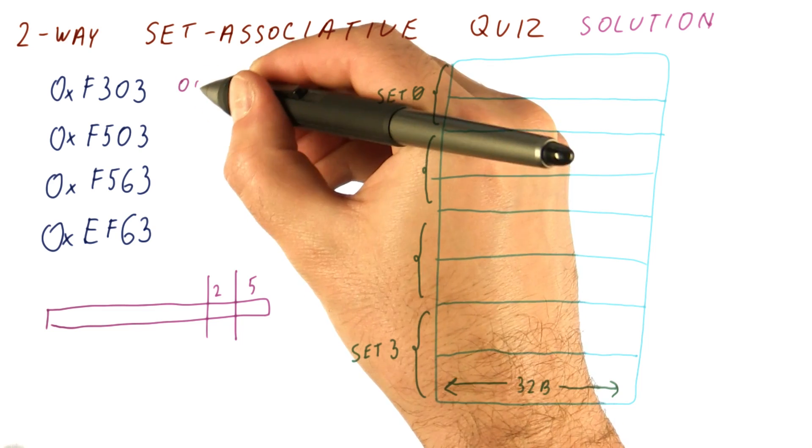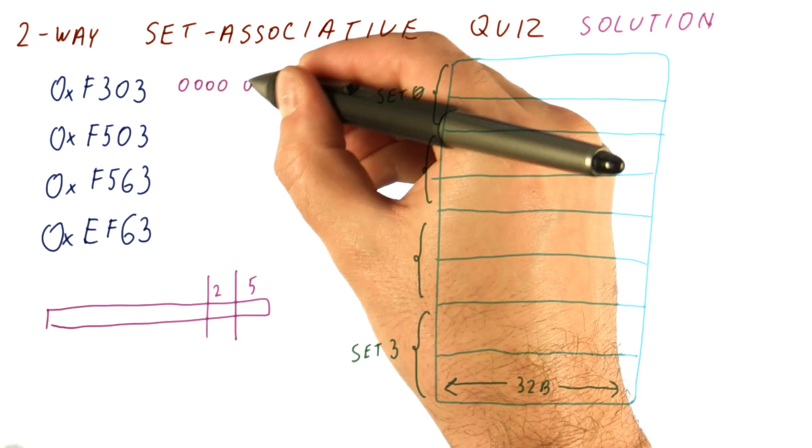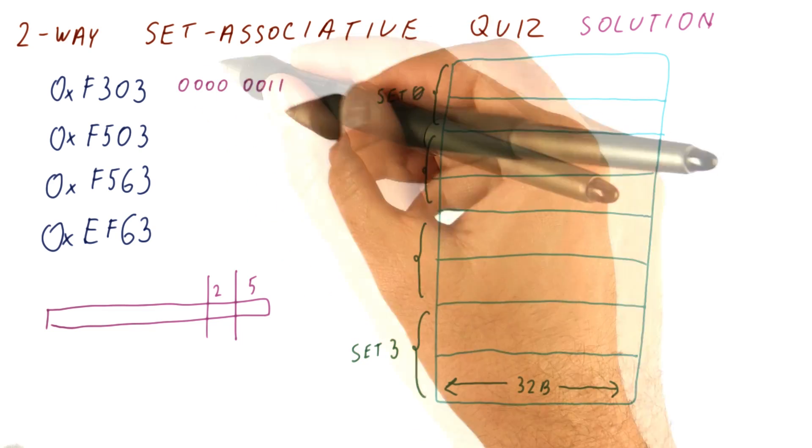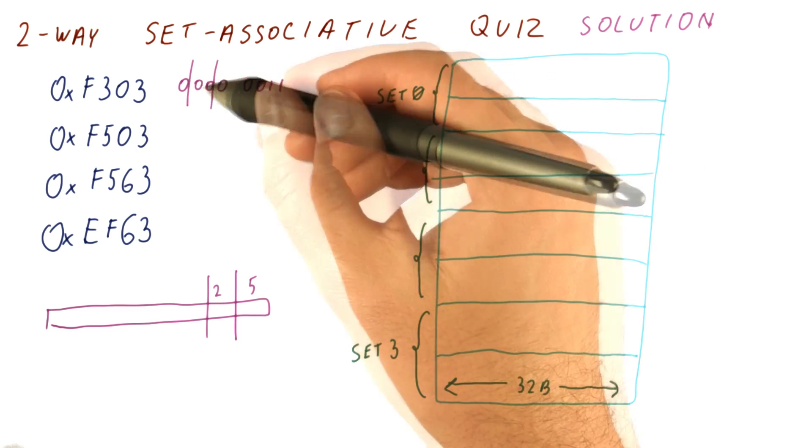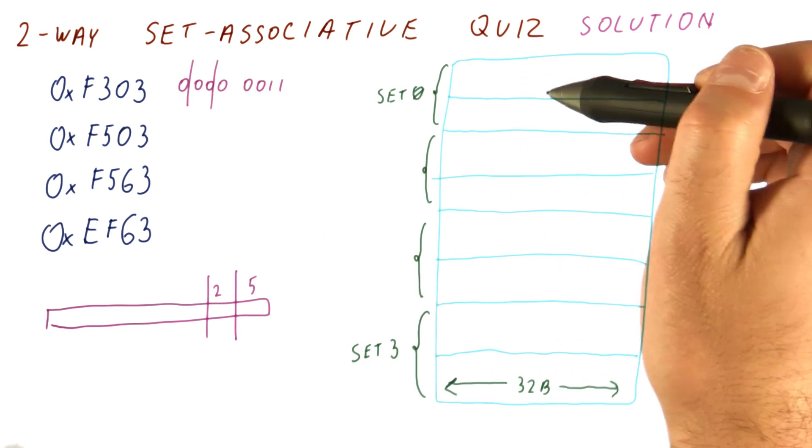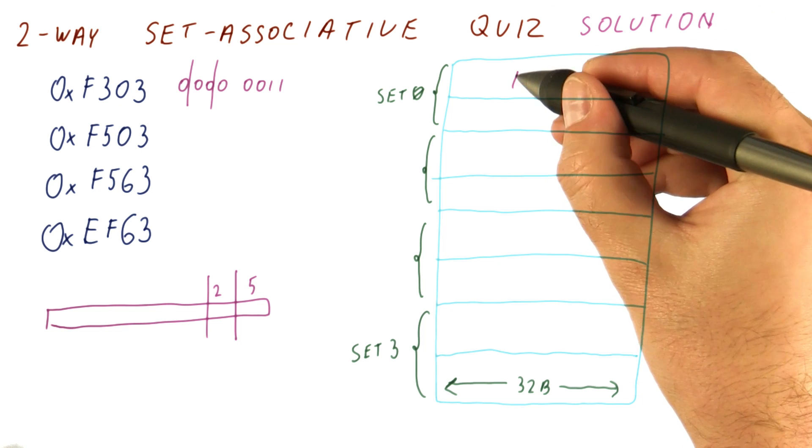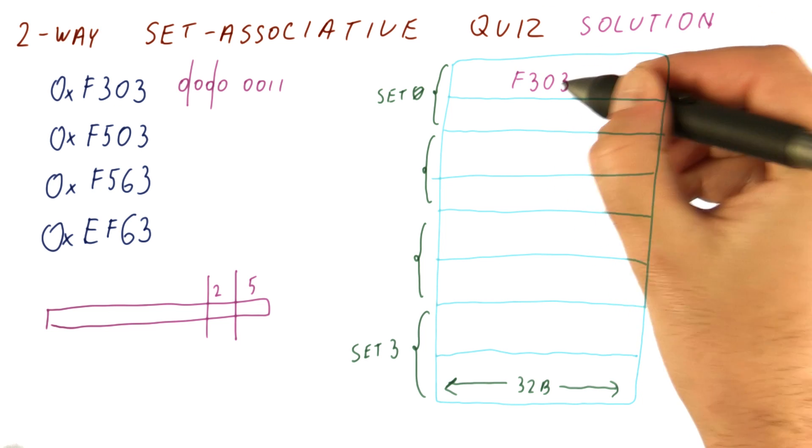So now we can just figure out that 0x0003 is like this. Five bits are the offset, the next two bits are the index. So this maps to set zero, and we will put F303 there.